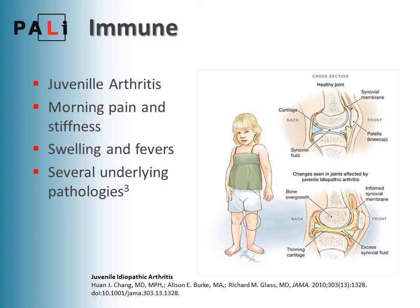For immune causes, juvenile arthritis has many types — idiopathic (with its own subtypes), lupus, scleroderma, Kawasaki's, dermatomyositis, and plenty of others. The main symptoms are about a six-week history of morning pain and stiffness, swelling, and fevers. If you're suspecting this, you need to examine the other systems, because many of these diseases can affect the cardiovascular system and other body systems.